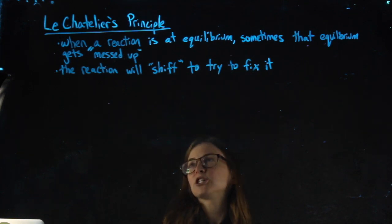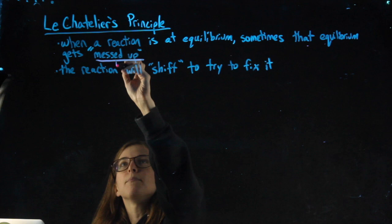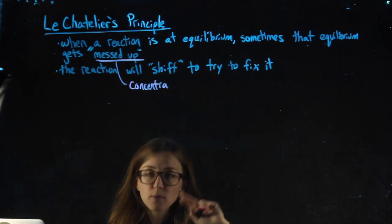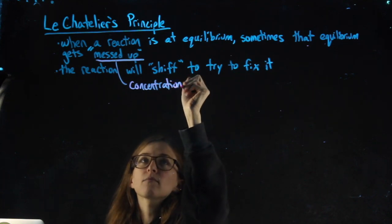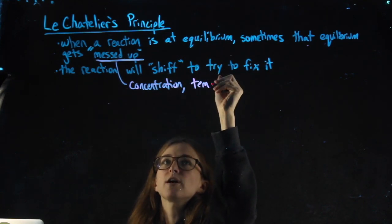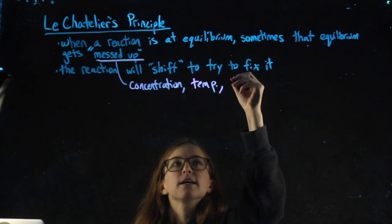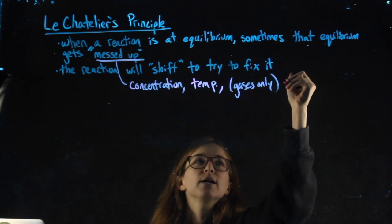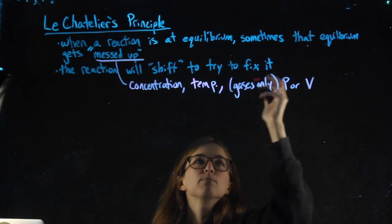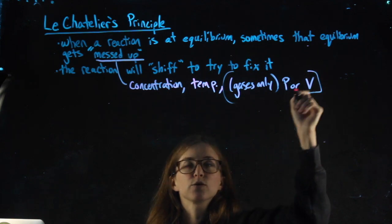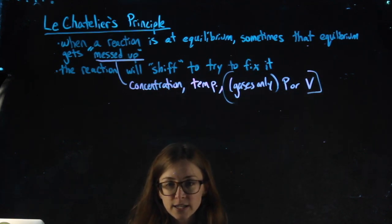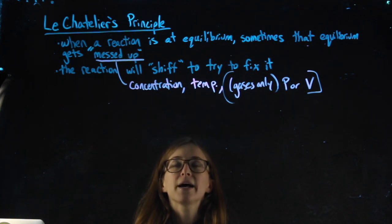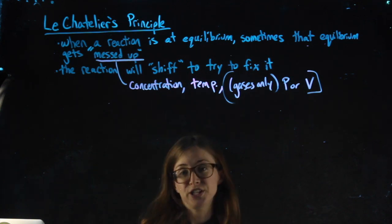How does a reaction get messed up? If we change the concentration of reactants or products, if we change the temperature, or for gases only, if we change the pressure or volume. Changing any of these throws off the balance that made the reaction be at equilibrium, and it's up to us to figure out which way it will shift to adjust.